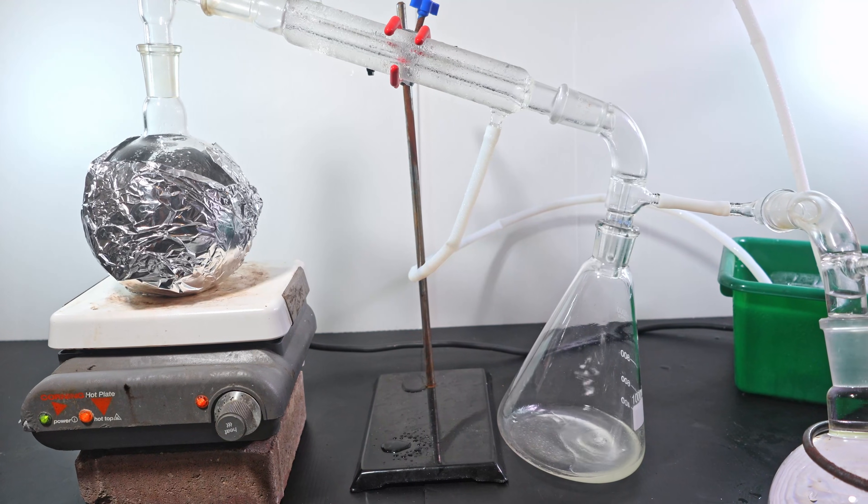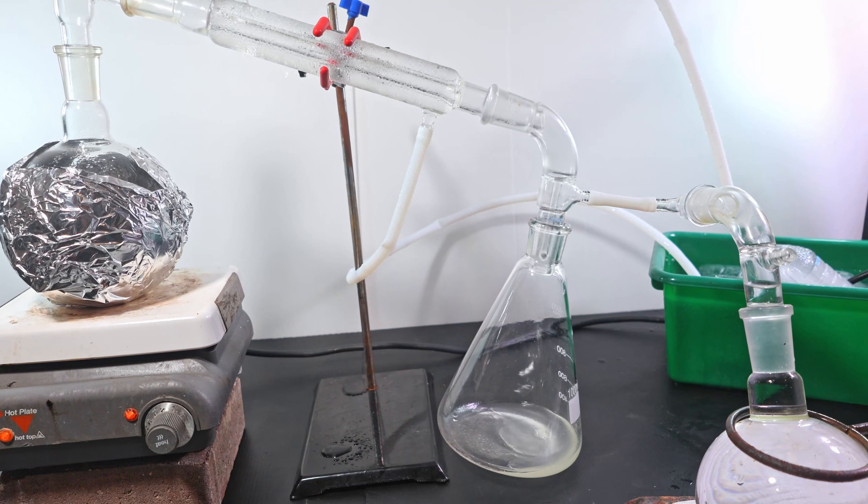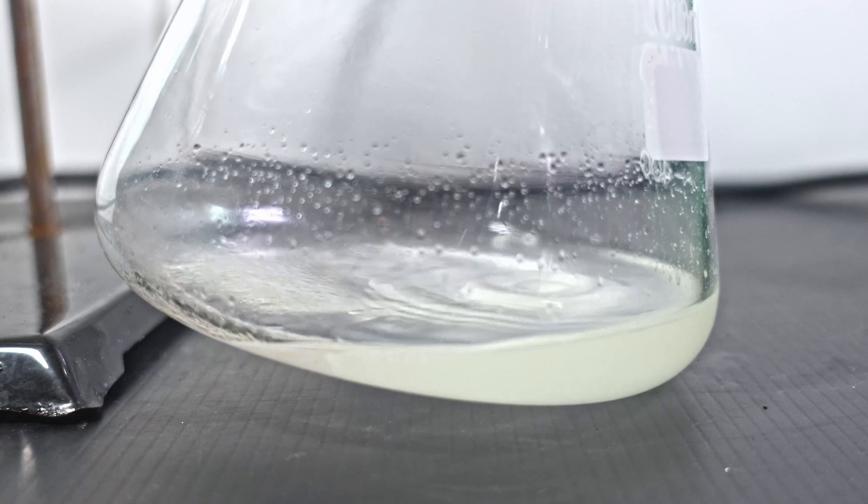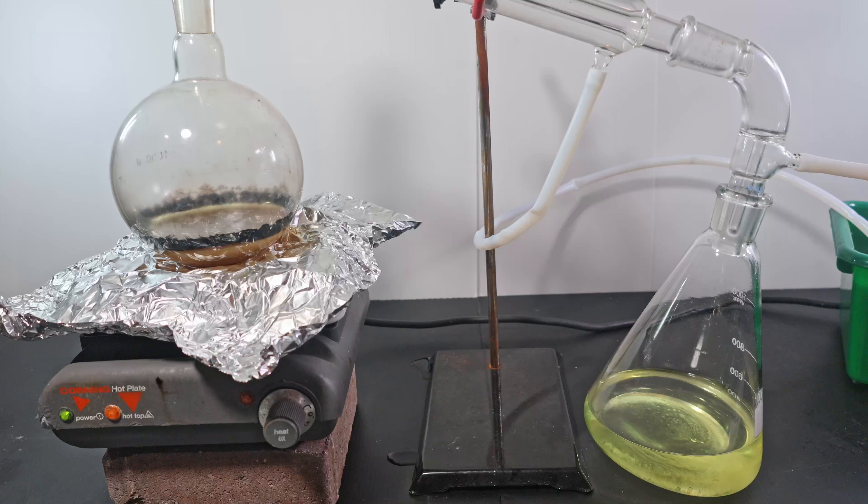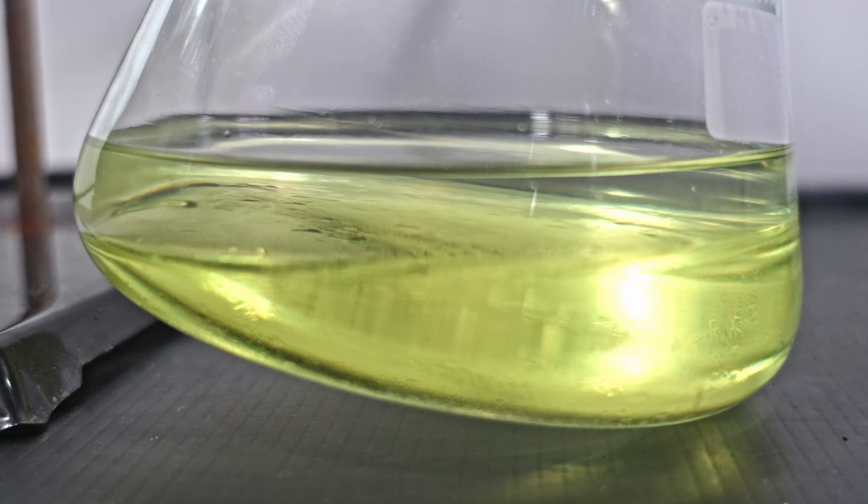I distill this under a water trap so lachrymatory vapors don't escape. One thing I noticed was how cloudy the distillation was. I may be getting allyl bromide first already. The reaction flask is completely black. When the distillation finishes, a ring of tar and a molten salt puddle are left. My distillate has taken on a light yellow color, probably due to some decomposed impurities.